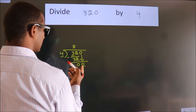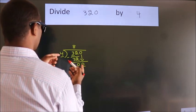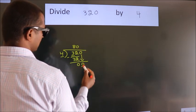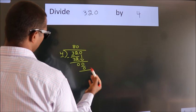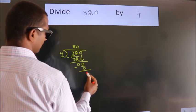When do we get 0 in the 4 table? 4 times 0 equals 0. Now we subtract. We get 0.